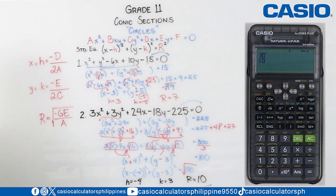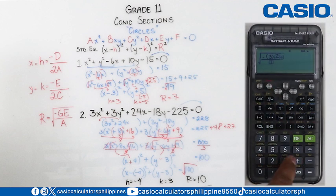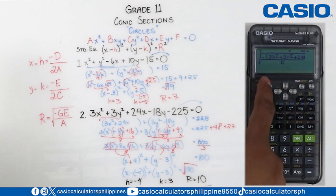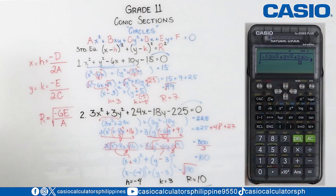Then, let's perform the last equation, which is to find the value of r. And that will be r is equal to the negative general equation. The general equation is 3x squared plus 3y squared plus 24x minus 18y minus 225. Then, our value of a is 3. Then, let's press equal sign and we get the value of our radius to be equal to 10 units, which is the same as what we got in our long method.